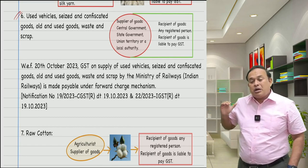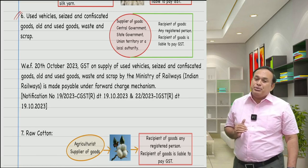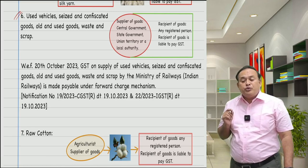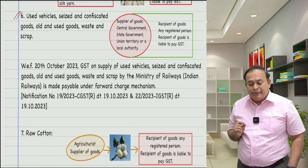Now, coming to the amendment which is taking place here from 20th October 2023. What happened here is that Indian Railways — Ministry of Railways — is none other than the Government, the Central Government of India.